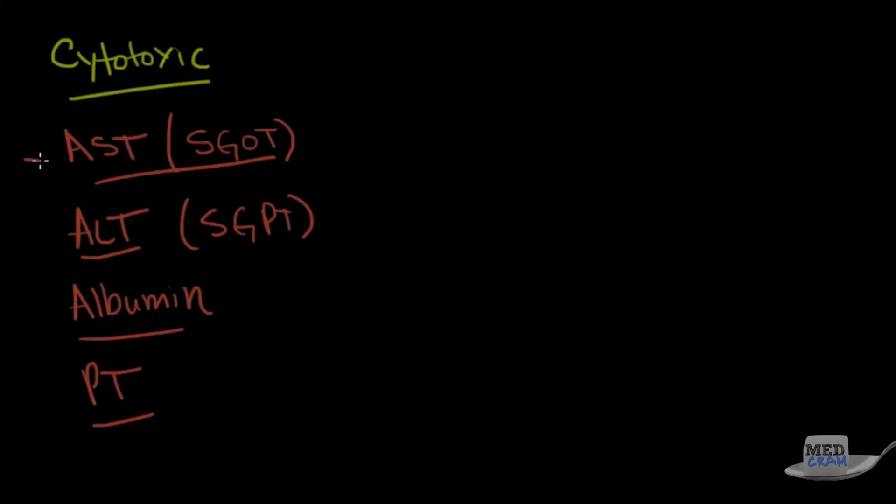So AST and ALT are simply enzymes that are in the hepatocyte. And when the hepatocyte dies, these enzymes get released. So in its essence, these are like cardiac enzymes. Like when you have a heart attack, you release CK, CKMB, and troponin. When you have an injury of liver cells, that's when the AST and the ALT go up.